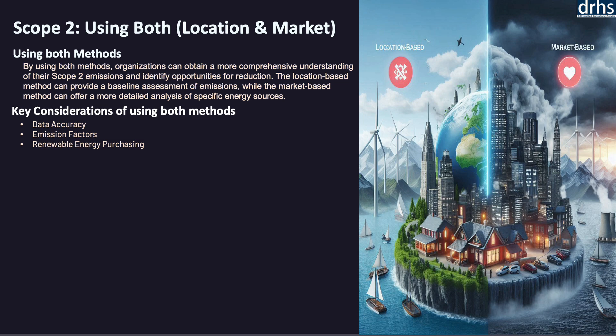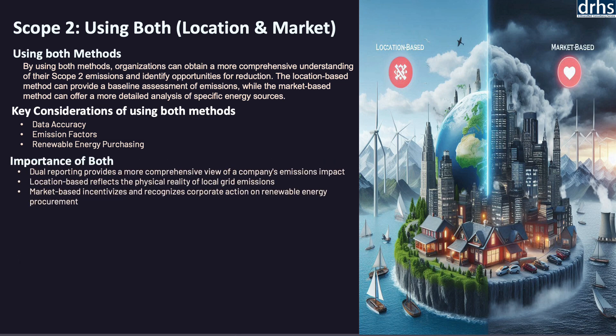Both methods are essential for a comprehensive understanding of an organization's scope 2 emissions. The location-based method offers insights into the broader environmental impact based on the regional energy mix, while the market-based method emphasizes the impact of specific procurement choices. Together, these methods enable organizations to report their emissions transparently, track progress in reducing carbon footprints, and make informed decisions about future energy strategy.